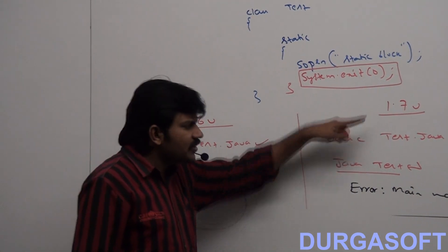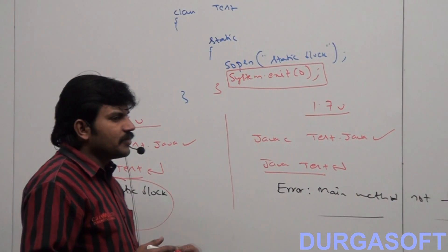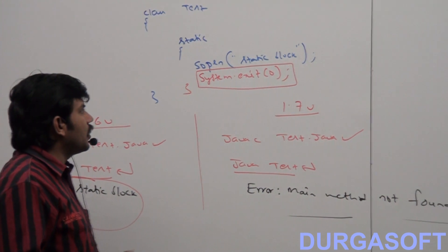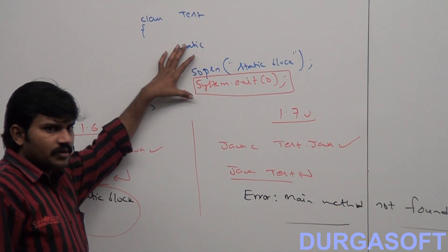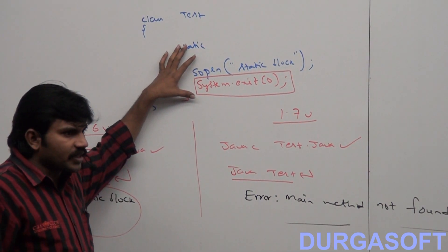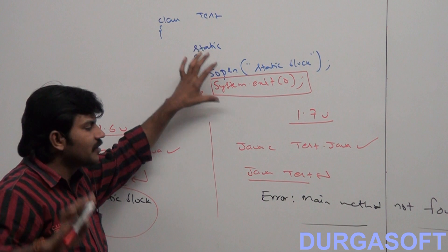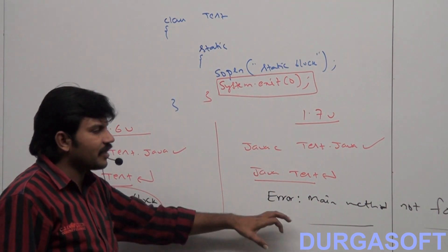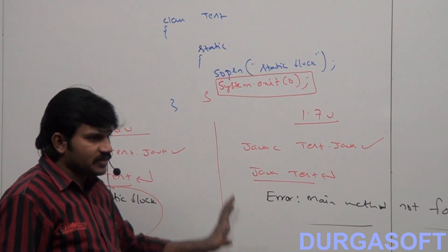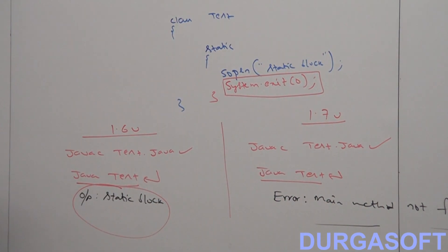But in the 1.7 version, directly JVM asks whether you have the main method or not. Since you don't have the main method, JVM says it cannot start execution. The same error information applies in the 1.7 version as well.